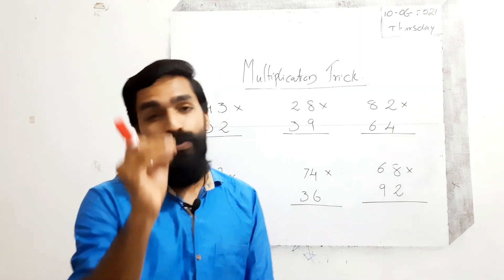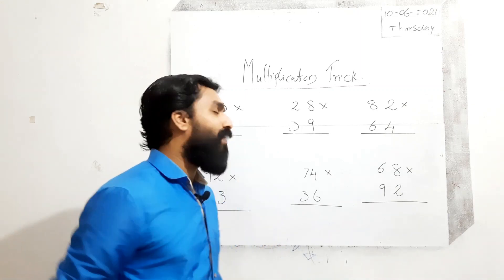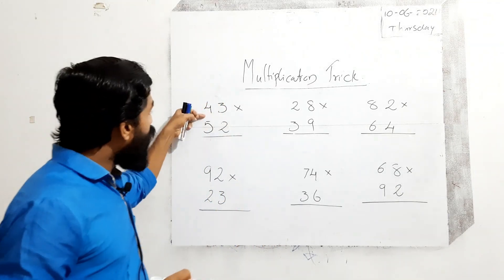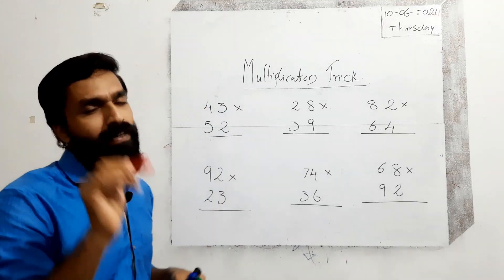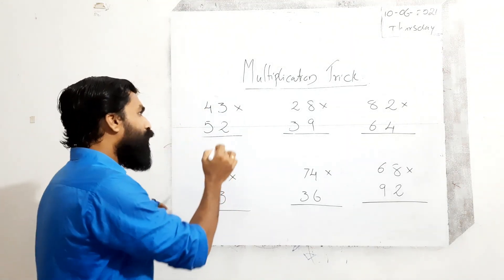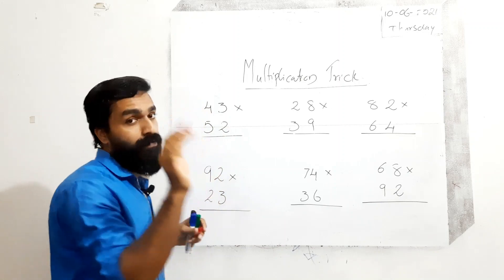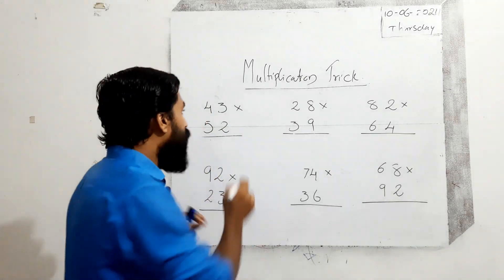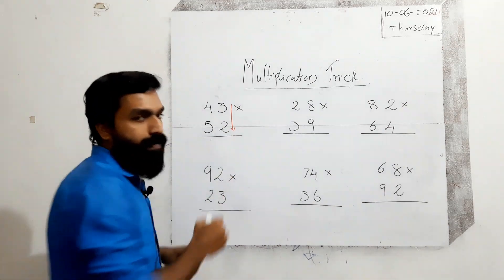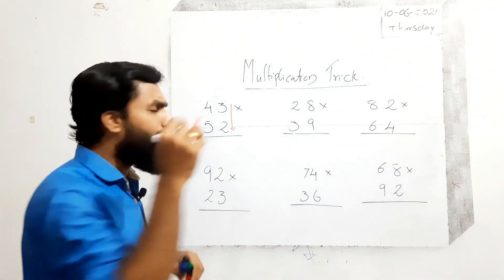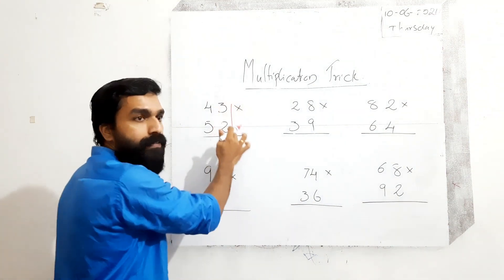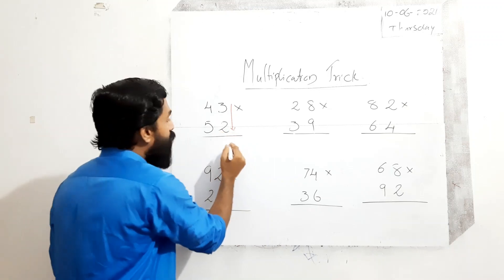We can go directly to the shortcut method. First product: 43 into 52. We have to multiply these two numbers. Step by step, just remember it. First step: multiply the unit places — 3 and 2.